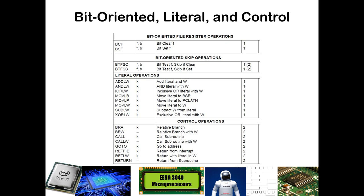Bit clearing and bit setting are also one cycle commands. Our literal operations — adding, inclusive oring, moving, and similar things — are one cycle commands. Down where we have control operations, they are mostly two cycle commands. These include things like calling subroutines and returning from subroutines. We haven't talked about interrupts yet, but returning from an interrupt service routine is also a two cycle command. We also have our go-tos — anytime we have these types of control operations, they take two instruction cycles.